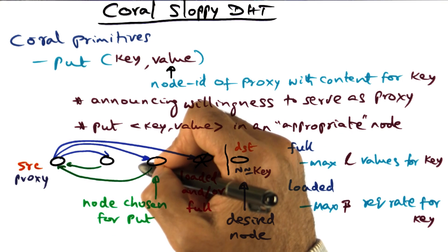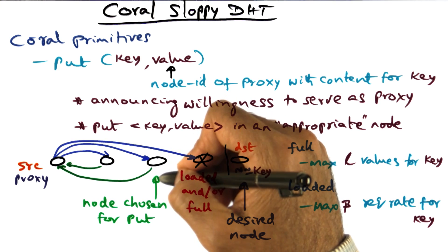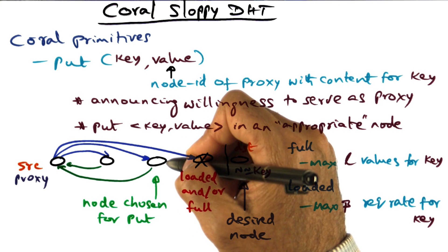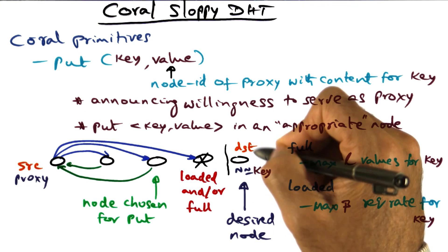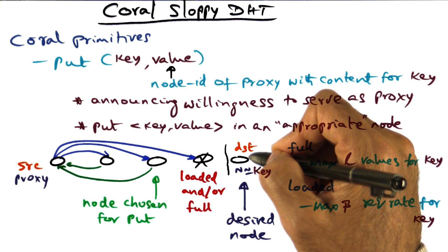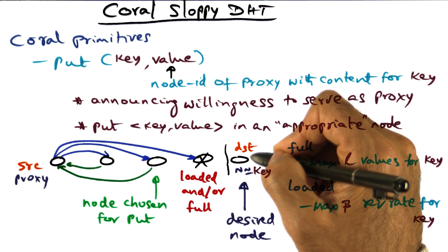And when I do that, my hope is I'll find the key somewhere along the way because some guy may be serving as the metadata server for that particular key. If not, I will go to the destination. If nobody has retrieved that key before, it will be available at the desired destination. I'll get it from there.